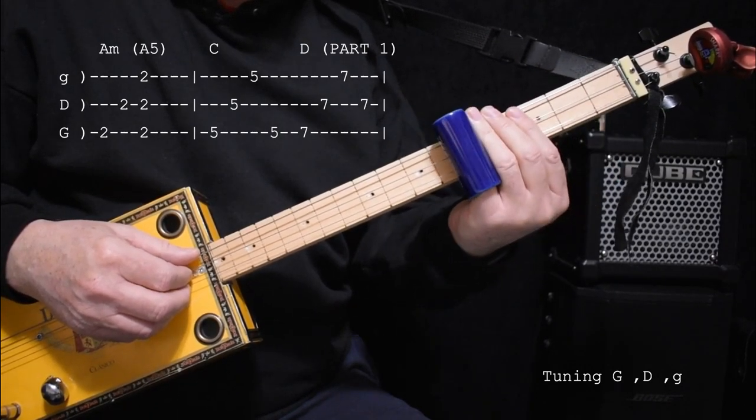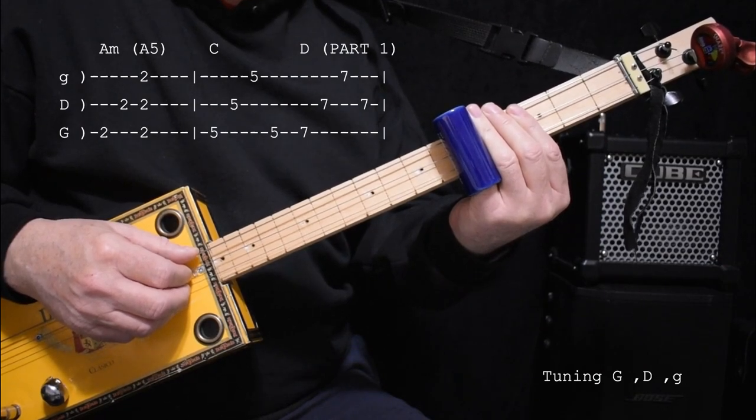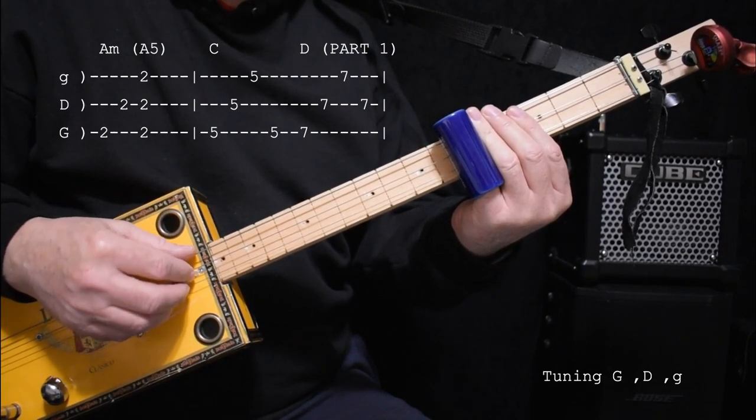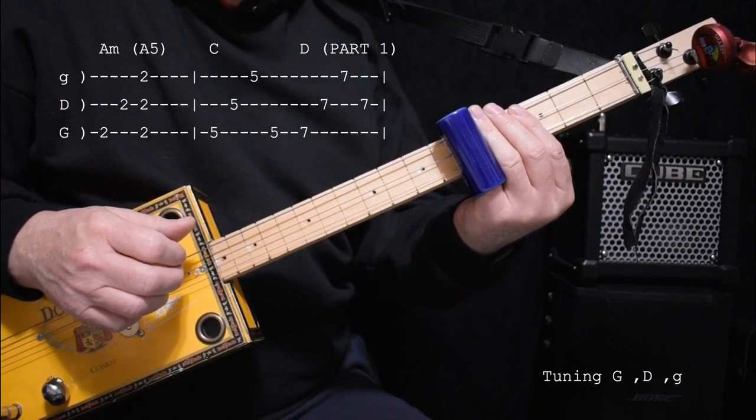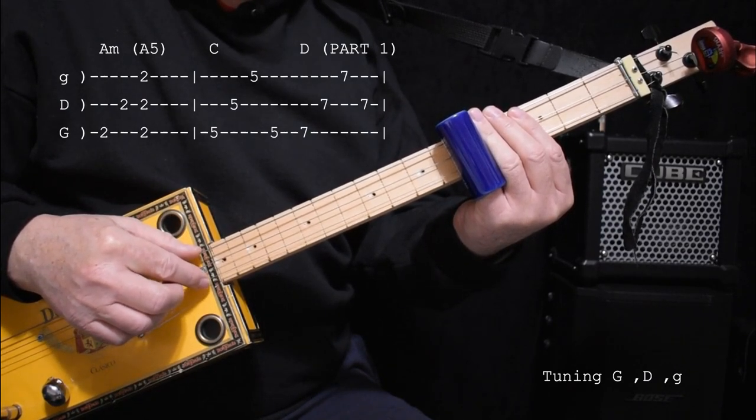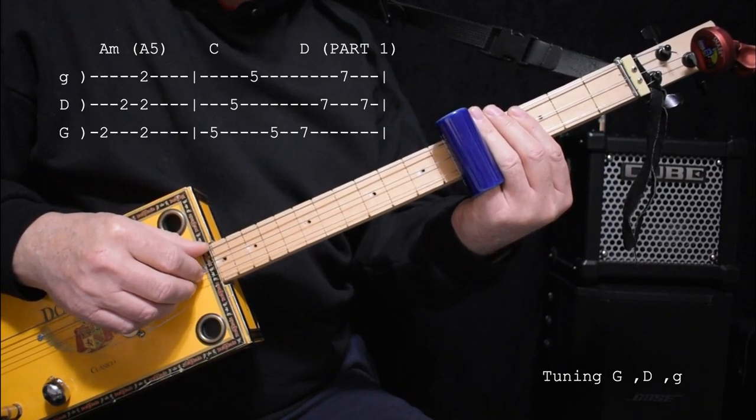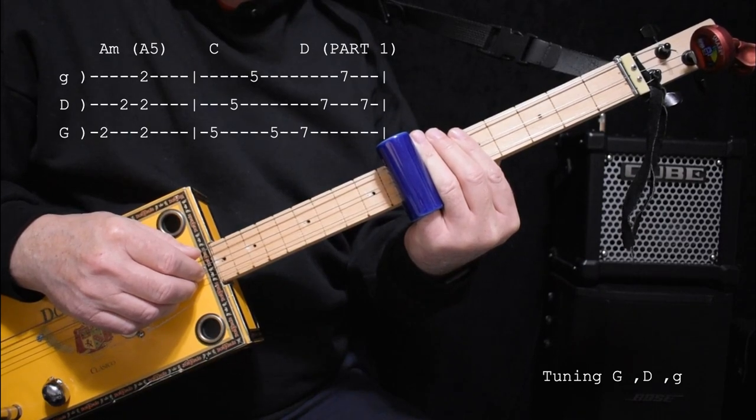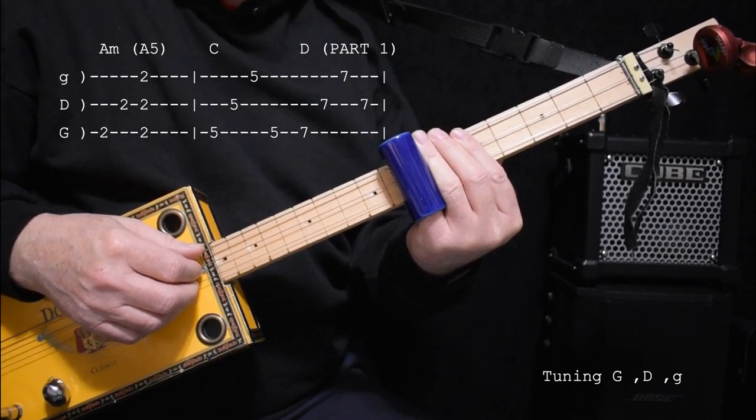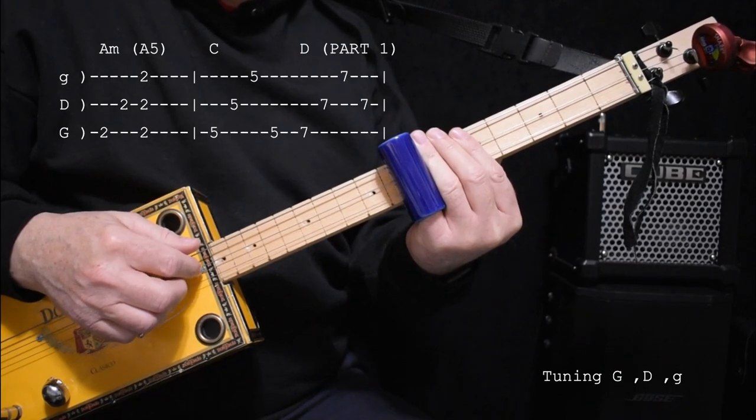Then we're going to go up to the fifth fret, which is C, and we're going to arpeggiate it, which means we're going to pick each note separately. So that was low, middle, high, and then we're going to go back to the low and go up to seven. This is now D, and we're going to go low, middle, high, middle.